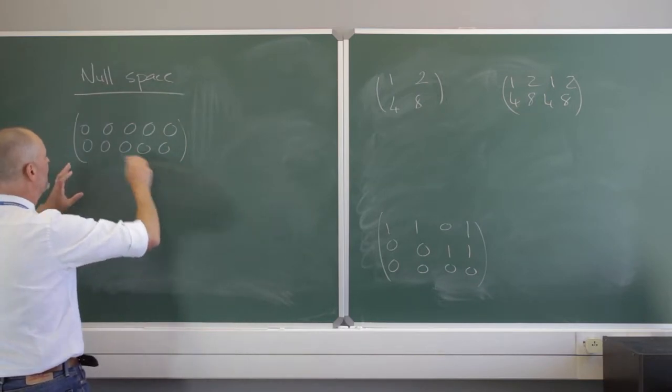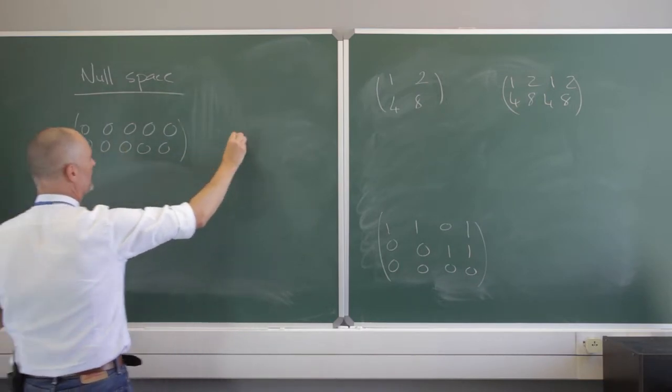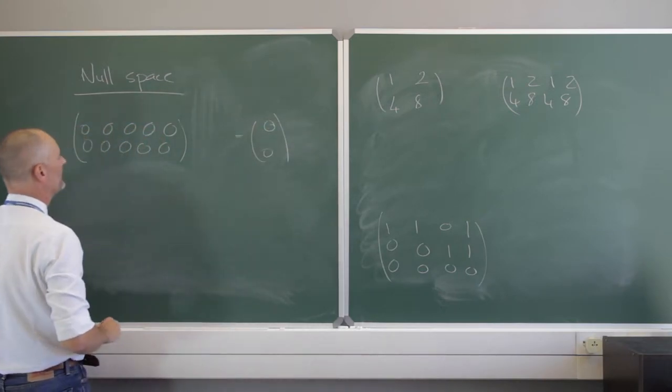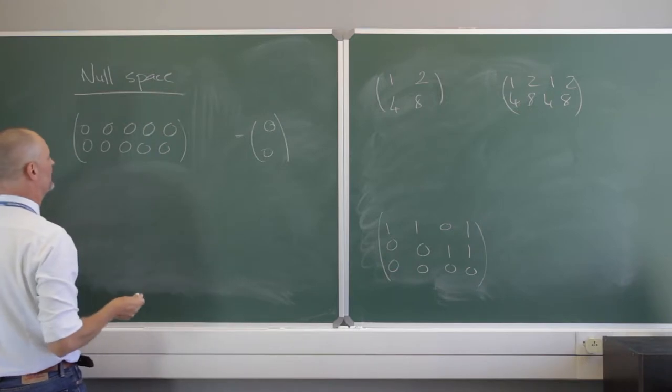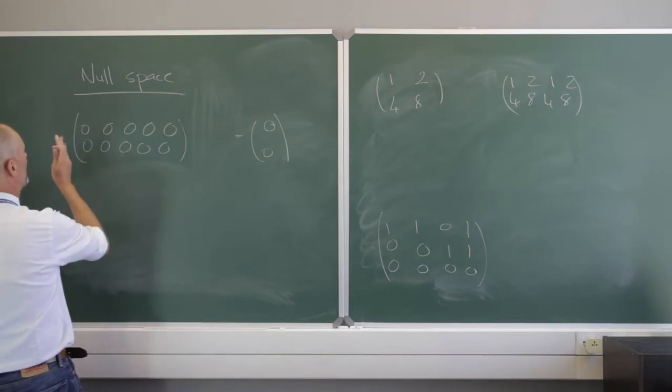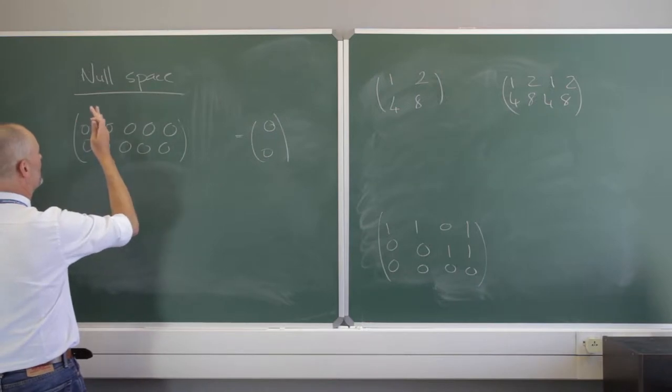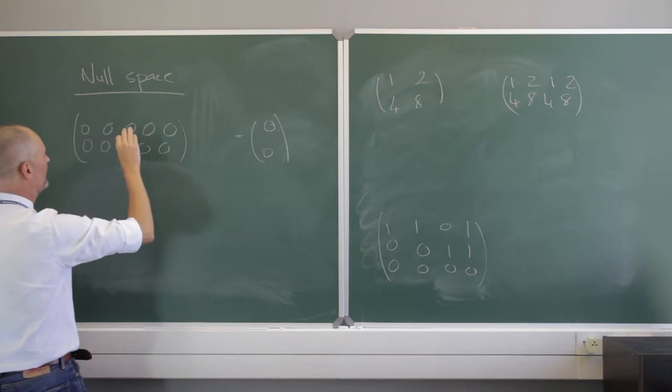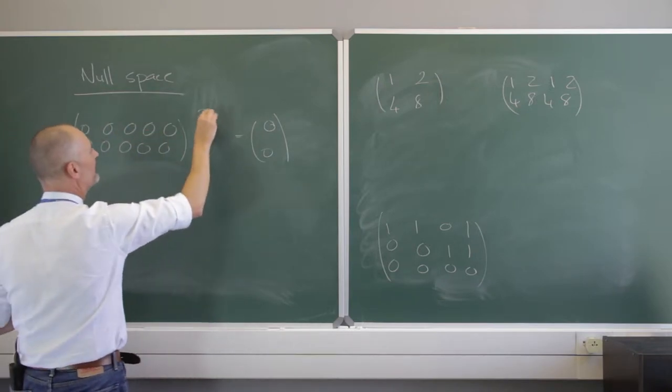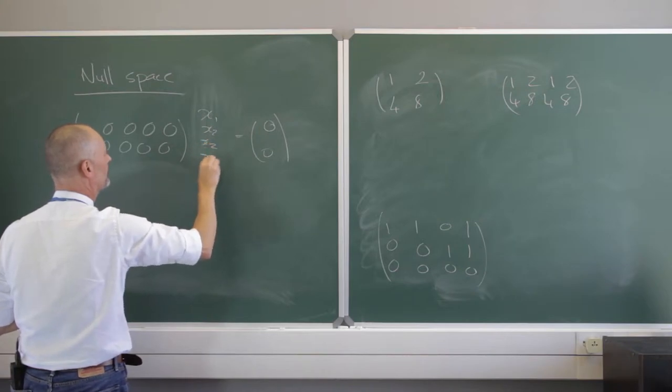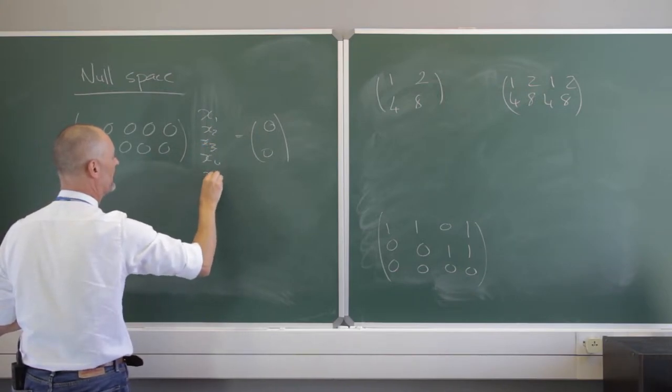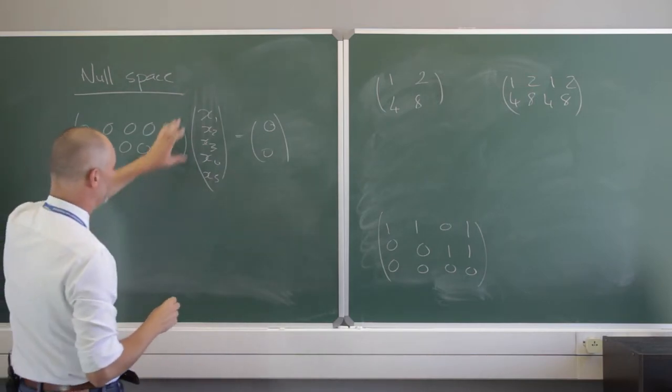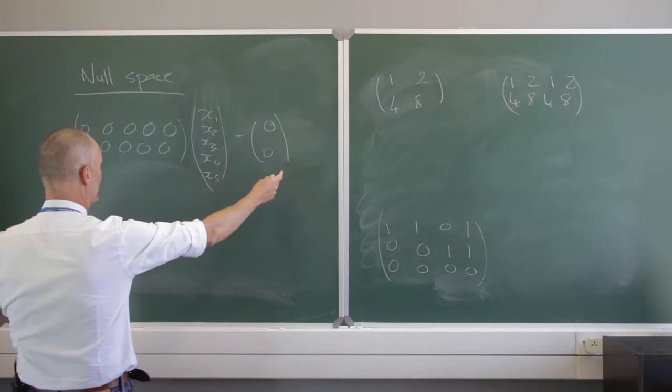I have this 2 by 5 matrix here and it's all zeros, and so that has got to equal the zero vector. On this side, I'm asking what is the null space of this? Well, remember, I need a linear combination of this column plus a linear combination of that, linear combination of that. So some scalar times this, some scalar times that, some scalar times this. So there better be 5 of these: x2, x sub 3, x sub 4, and x sub 5.